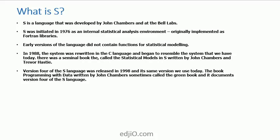They were Fortran libraries to repeat these statistical routines. Early versions of the language did not contain functions for statistical modeling — that did not come until roughly version 3. In 1988, the system was rewritten in the C language to make it more portable across systems, and it began to resemble the system we have today — this was version 3. There was a seminal book called 'The Statistical Model in S' by John Chambers and Tagwar, sometimes referred to as the white book.